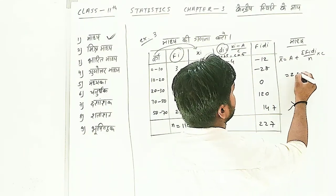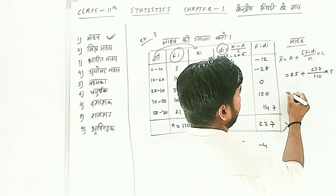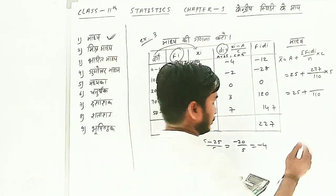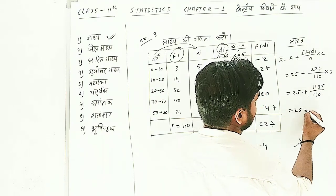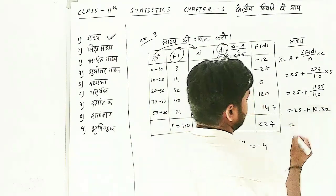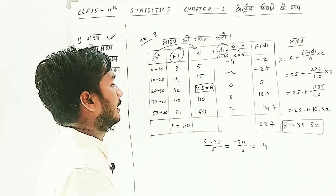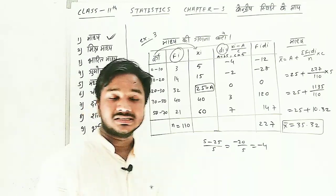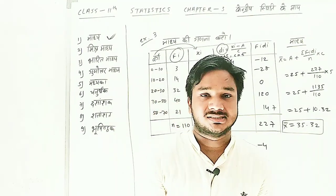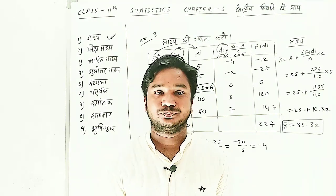Then X̄ = a + (ΣFidi ÷ N) = 25 + 110 × (c/i) divided by N. This is our final answer for example 3. It is your responsibility to complete your exercise. If you have any query in the exercise, contact me or comment below. Thank you.